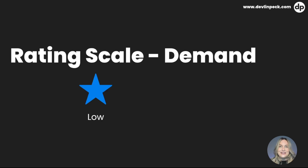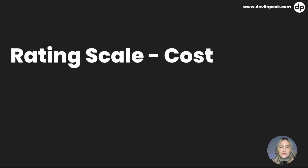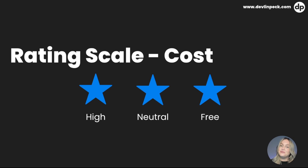The next rating scale is demand. If you see one star, that means the market demand is low — we're not seeing it on a ton of job descriptions. Two stars means neutral, and three stars means it's in very high demand, so it could be an industry standard or we're seeing it on a lot of job descriptions. The third and final rating scale is cost. One star means it's high compared to other tools in the category. Two stars means neutral, and three stars means it's free. There are a lot of free options today — every single category except for one has a free option.